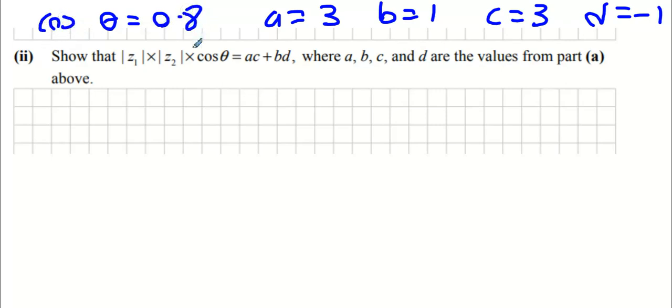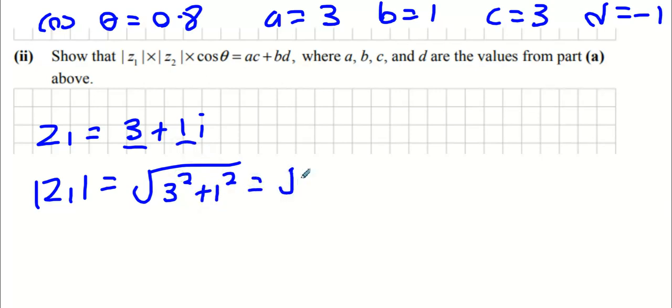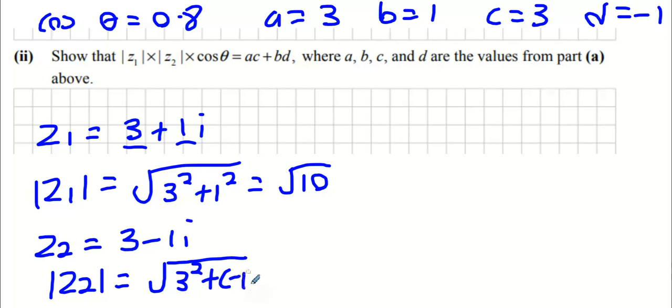Now z₁ and z₂ - if you're ever asked for modulus, z₁ is 3 + i, so the modulus of z₁ is basically you get the real part and square it, you get the imaginary part and square it. We already knew that its length was √10. Likewise with z₂ which is 3 - i, the modulus or length of z₂ from the origin is going to be √(3² + (-1)²) and that is also √10.